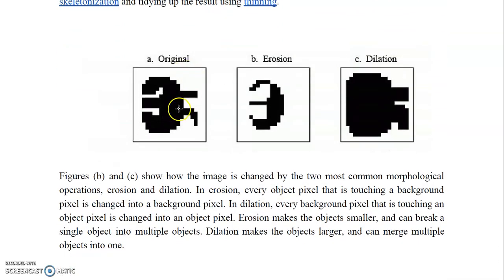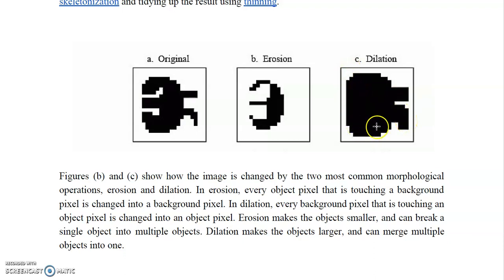Consider an original image: applying erosion alone gives one result, but applying dilation gives another. Erosion alone may not give very good results if you want to preserve certain features like switches, while dilation fills in too much making other areas black. This means erosion works well in some places and dilation in others — so shouldn't we combine them to get better results? That leads to the concept of combining erosion and dilation.